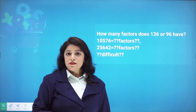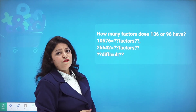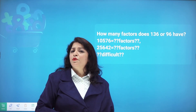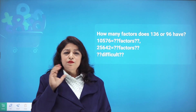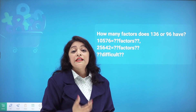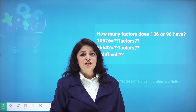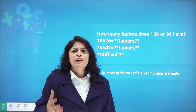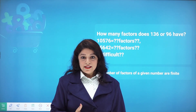Let's find how many factors 136 or 96 have — you can try on your own. For a big number like 10,576 or 25,642, finding factors seems difficult because we don't know all the tables. There is a trick: the method of prime factorization, which we will cover in this chapter. One key point: the number of factors of a given number is always finite.